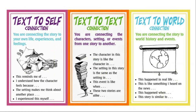Finally, text-to-world connections — this is when you are connecting the story to world history and events. Text-to-world connections also incorporate text-to-media connections: things you have seen through the news or a textbook, not necessarily a story, but something you've learned about the world through the media. When you're making these kinds of connections you might say: 'This happened in real life when…', 'This is like something I heard on the news', or 'This story is similar to…'. These connections relate to things that happened to someone else or somewhere else in the world that you are aware of.